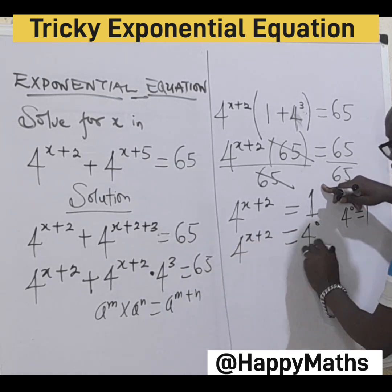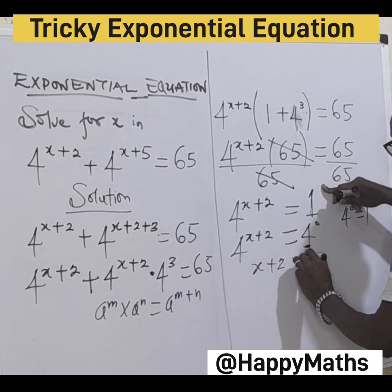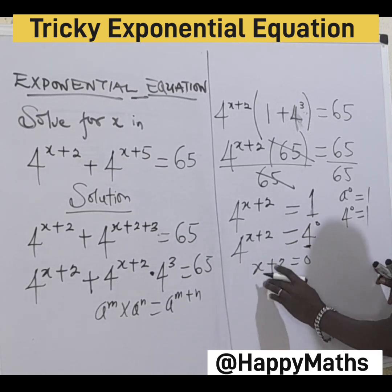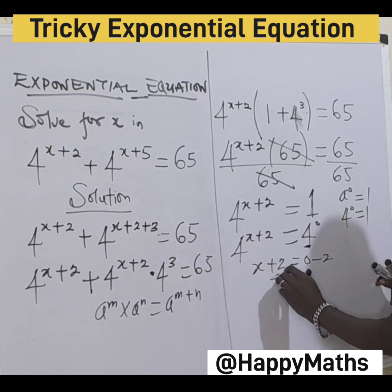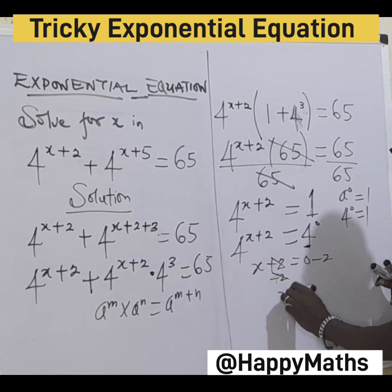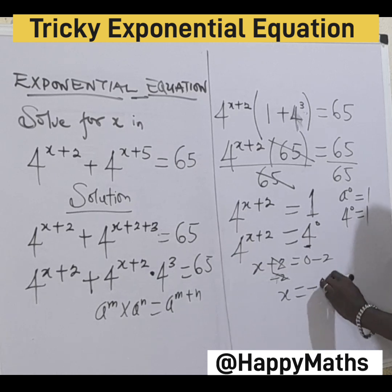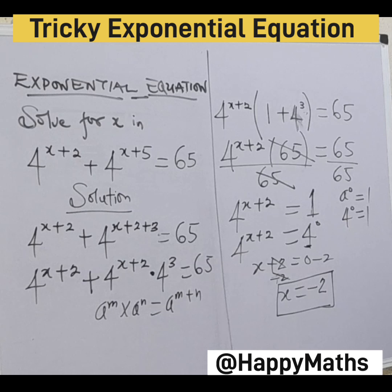Since the bases are the same, we equate the powers: s plus 2 equals 0. Subtract 2 from both sides and s equals minus 2. That is the answer! If you find this interesting, like, check the full format, subscribe to Teach an Affirmance Academy — bye!